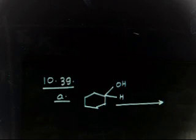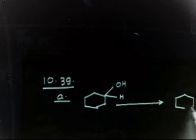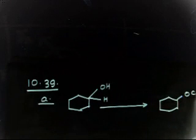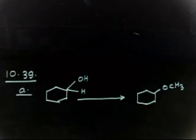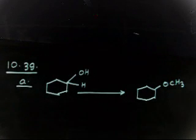Let us discuss the next problem — problem 10.39. This involves a conversion. For part II, you have been given a compound and using this compound you have to convert it to another compound. So you have to convert this to 4-CST — how will you convert from this compound to this one?